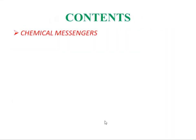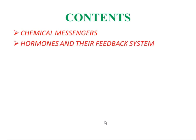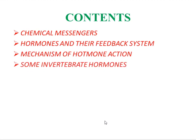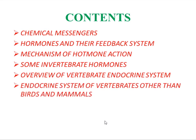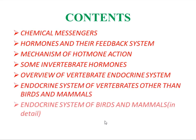In this chapter we will discuss the chemical messengers, hormones and their feedback system, mechanism of hormone action, some invertebrate hormones, overview of vertebrate endocrine systems, endocrine system of vertebrates other than birds and mammals, and the endocrine system of birds and mammals, which we will discuss in detail including all the endocrine glands of mammals including human beings.